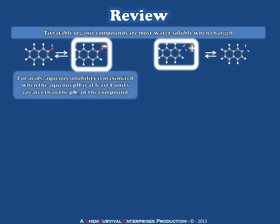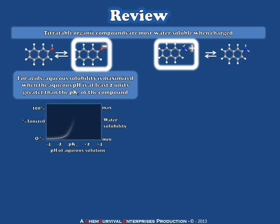So for acids, aqueous solubility is maximized when the aqueous layer pH is at least two units greater than the pKa of that compound, which gives us a Henderson-Hasselbalch plot that looks like this, transitioning through the pKa with maximum water solubility in the basic region.